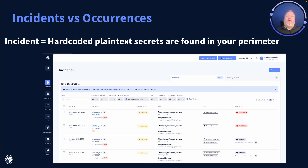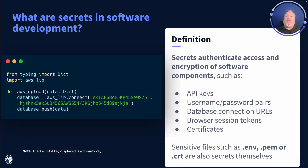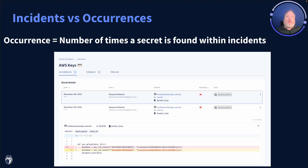Let's move on to some definitions. When we say incident, we're referring to hard-coded plain text secrets found in your perimeter. Your perimeter is made up of all the places where you store your source code. When we say secret, what we're really referring to are credentials such as API keys, username passwords, certificates, or entire types of files like ENV files or PEM files, which should never be checked into your source control systems. When we say occurrence, what we're referring to is the number of times the same secret is found within an incident. In this example, we see in this one incident we have two occurrences of the same AWS key.